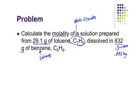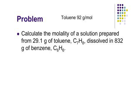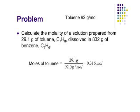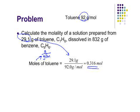Let's first do the moles of toluene calculation, and then we'll plug this into the molality formula. If you look up on your periodic table, seven carbons plus the mass of eight hydrogens gives a molar mass of about 92 grams per mole for toluene. Moles equals grams divided by the molar mass, so 29.1 grams divided by 92 grams per mole gives us 0.316 moles of toluene.